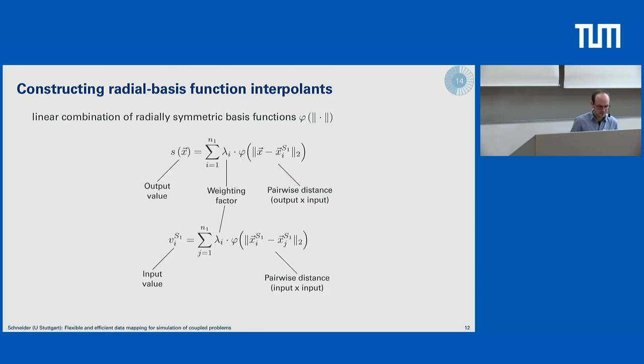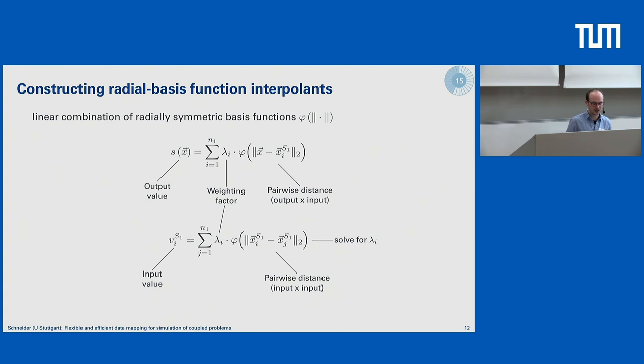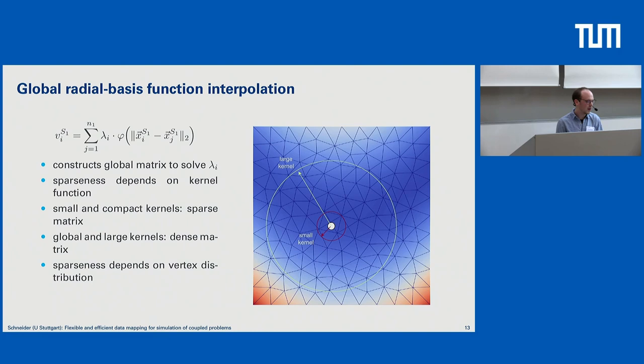To define our weighting factor, we use the interpolation condition, because there are locations in our domain where we actually know the solution — exactly the input mesh vertices. We have input mesh vertex locations x_i, and we want to represent our input values at those locations. In this equation, the input values and input mesh locations are known, so we can rearrange and solve for lambda. With this, we can already compute our global RBF mappings.